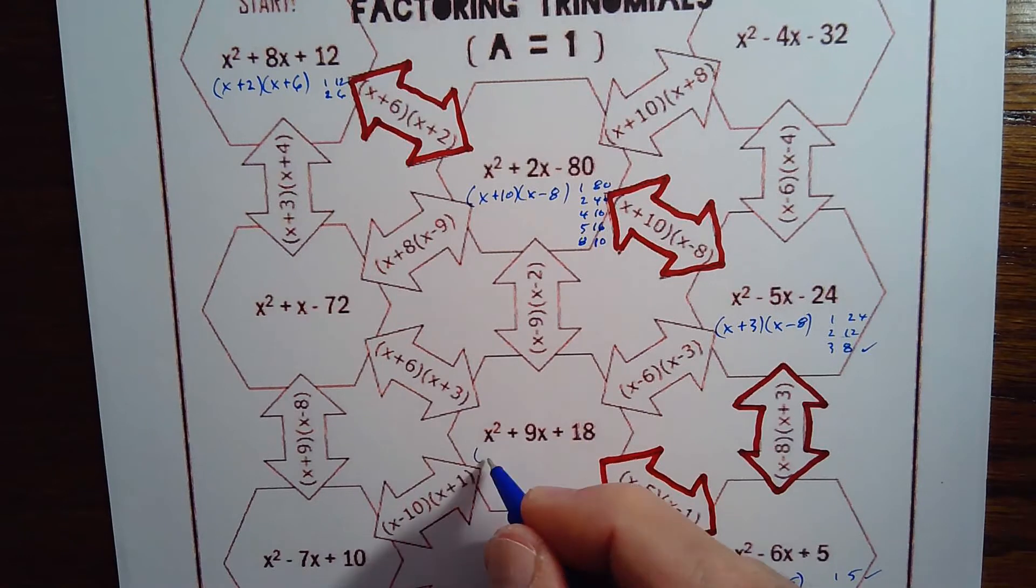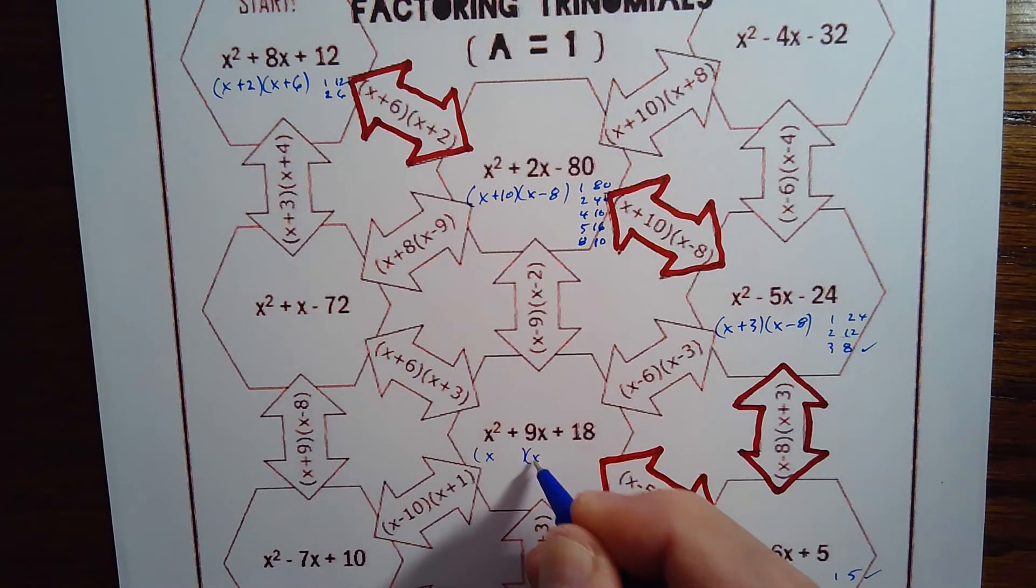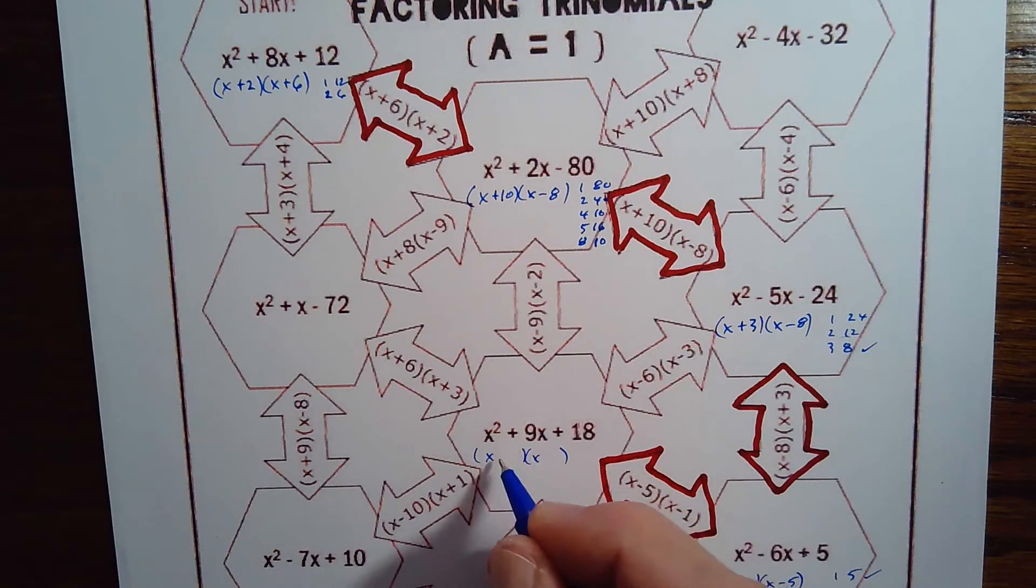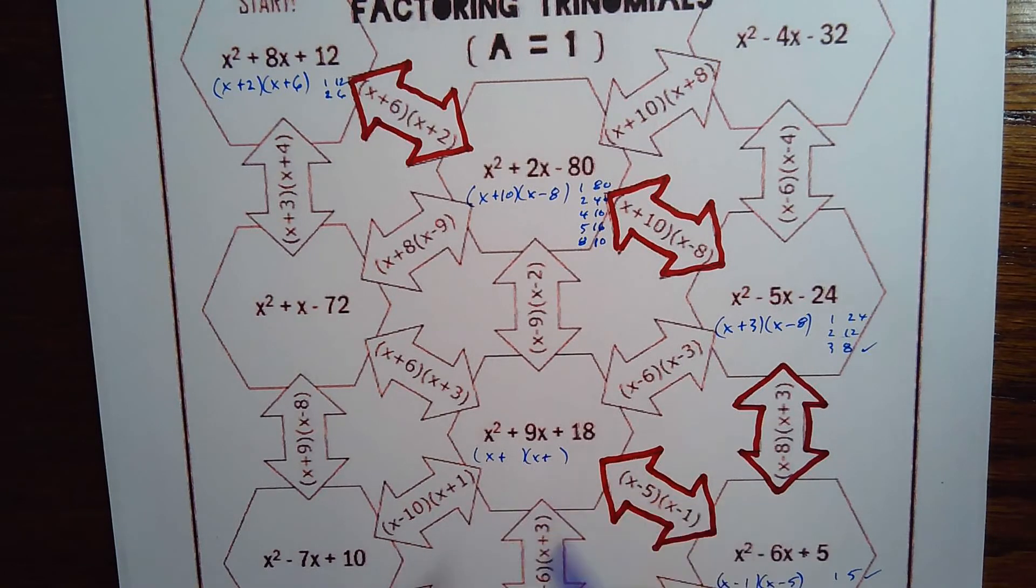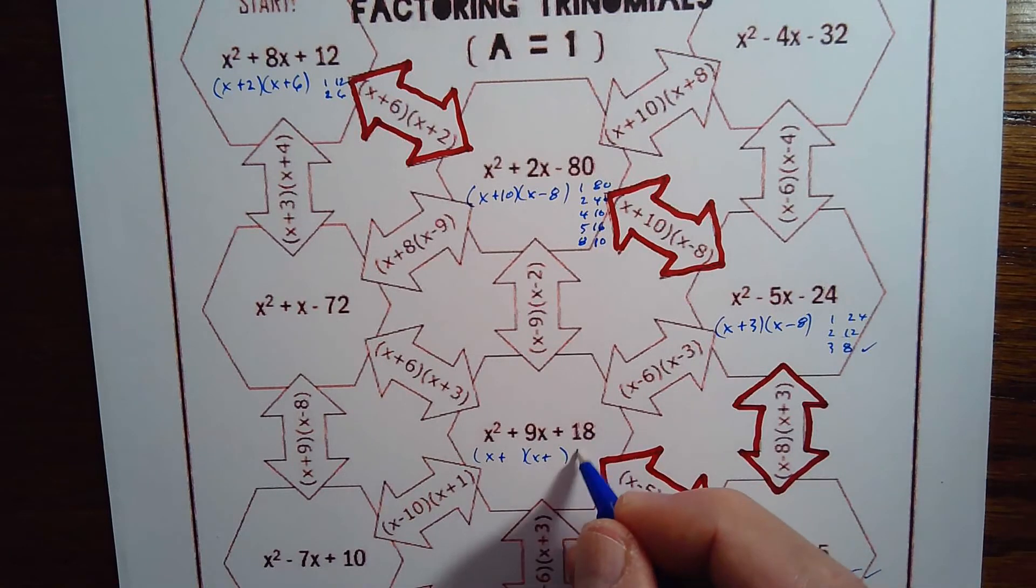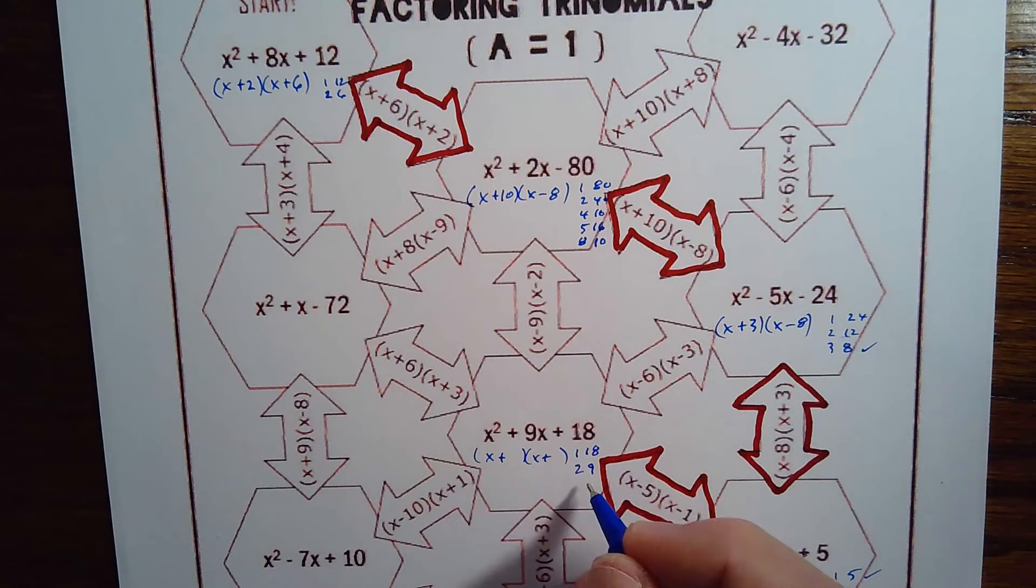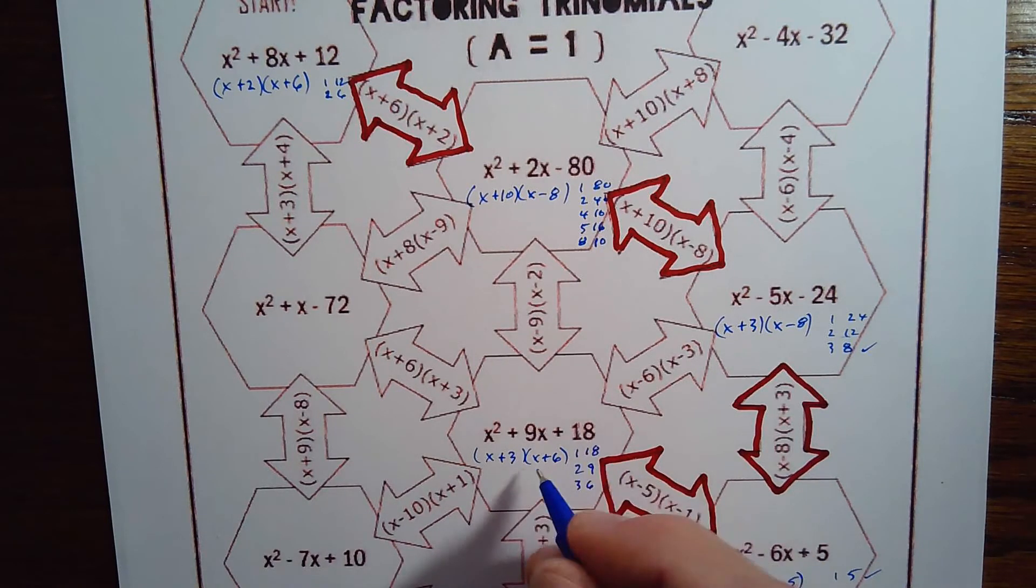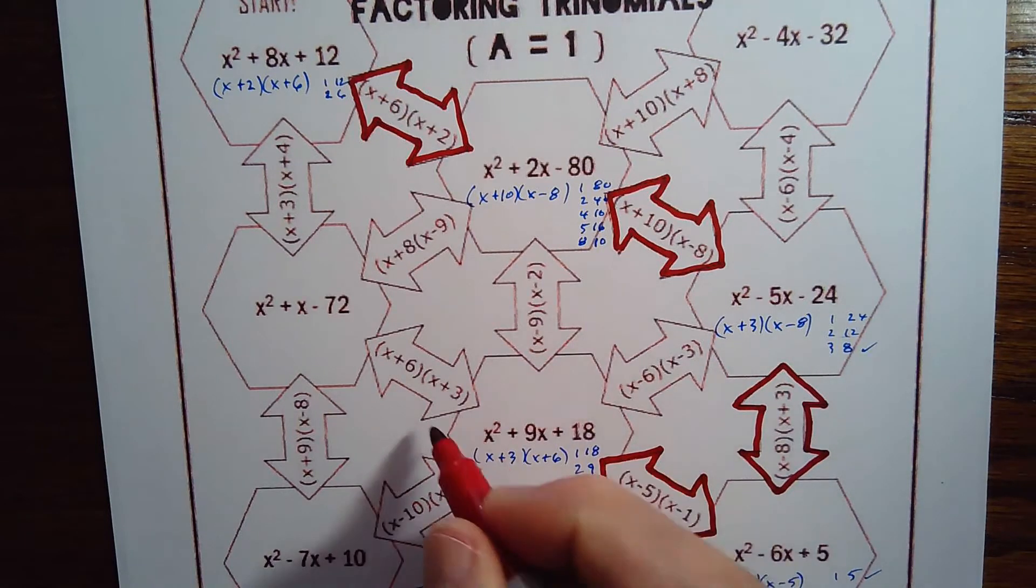Alright, this one now. x and an x, positive sign here on the last term, positive sign in the middle term. That means there's both positives. And then 1 and 18, that doesn't make 9. 2 and 9, that makes 11, so that's close but no. How about 3 and 6? Yes, 3 times 6 makes the 18, 3 plus 6 makes the 9. So that's heading us back up here.